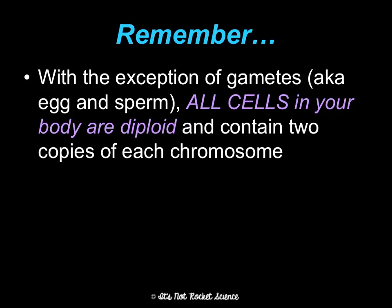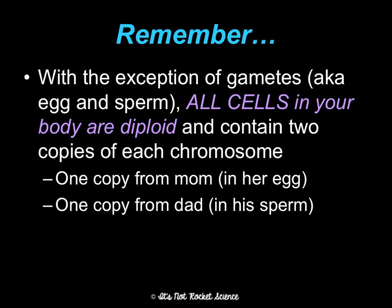With the exception of gametes, which are egg and sperm, all cells in your body are diploid, and they contain two copies of each chromosome. One of those copies is from mom and her egg, and one came from dad and his sperm.